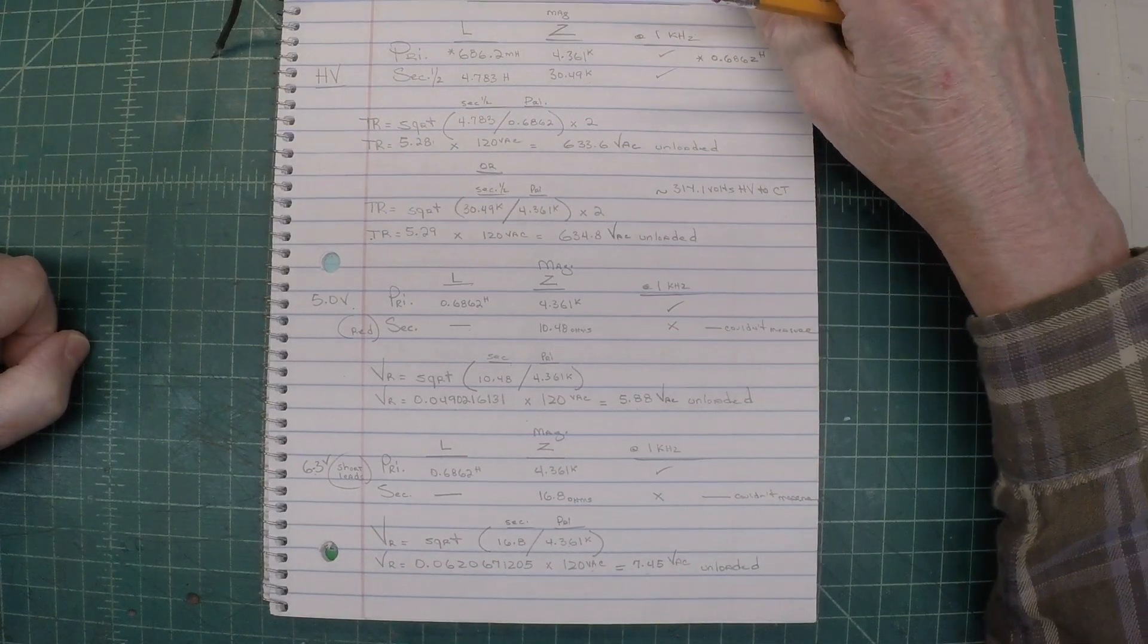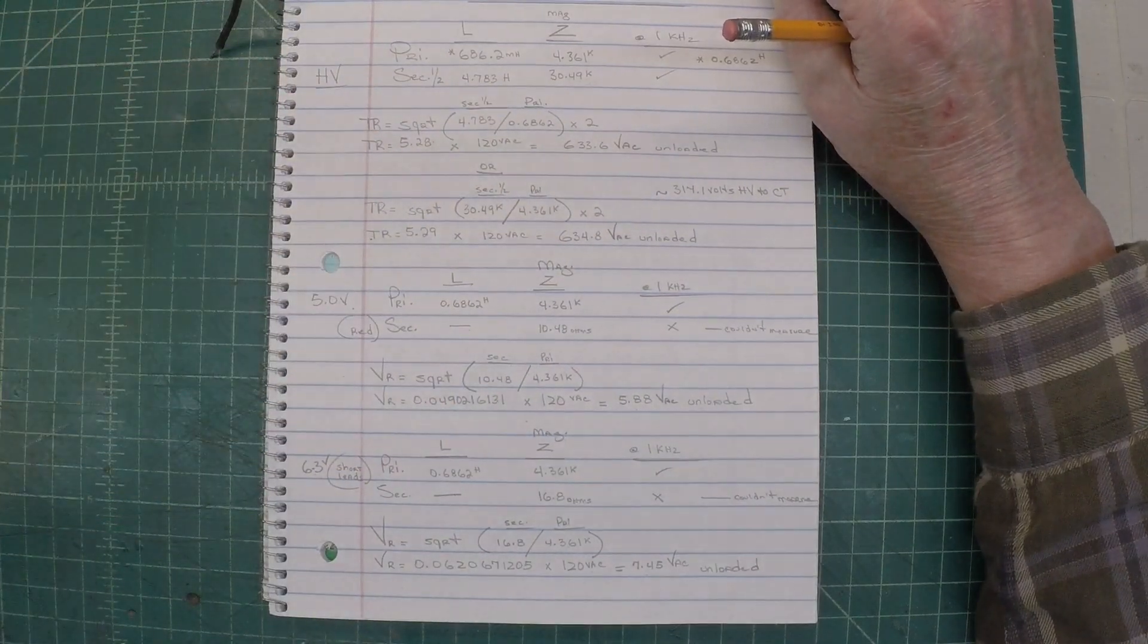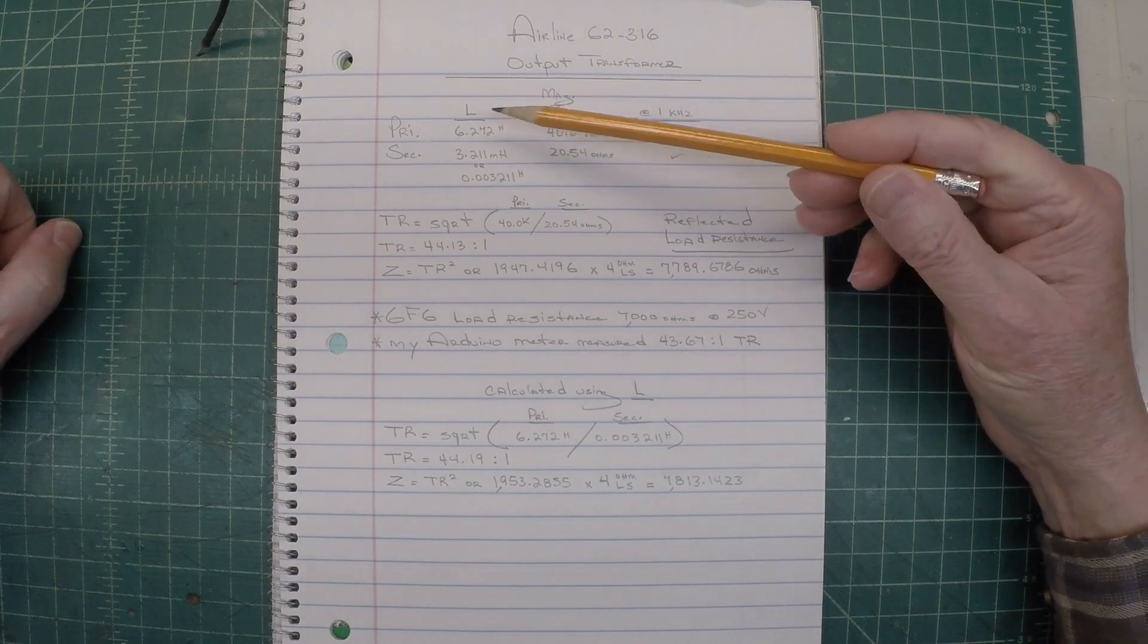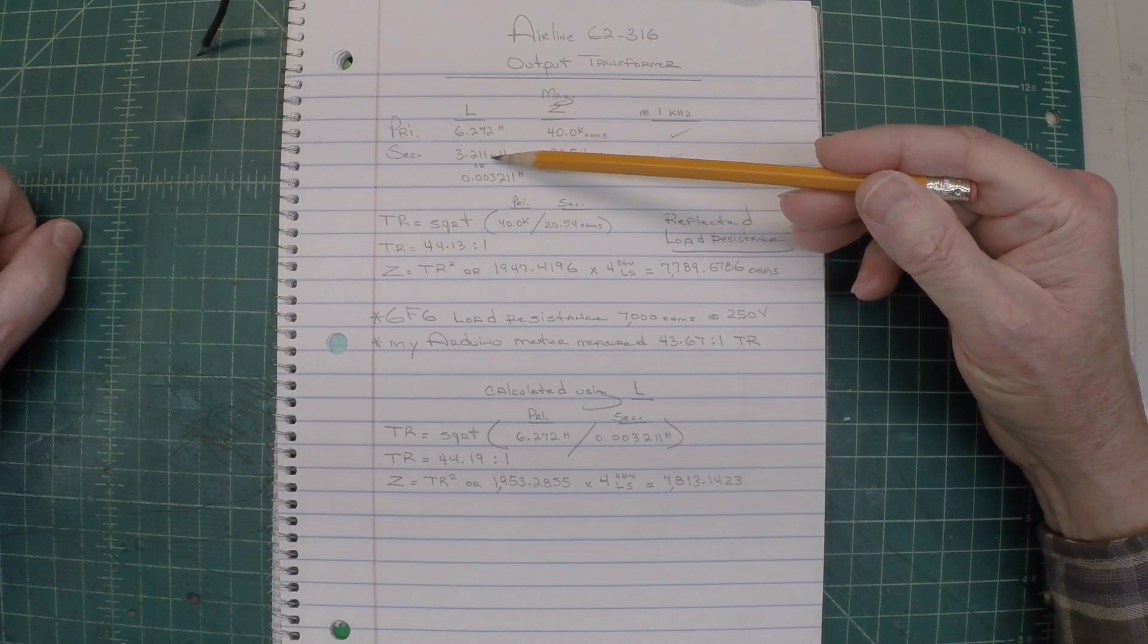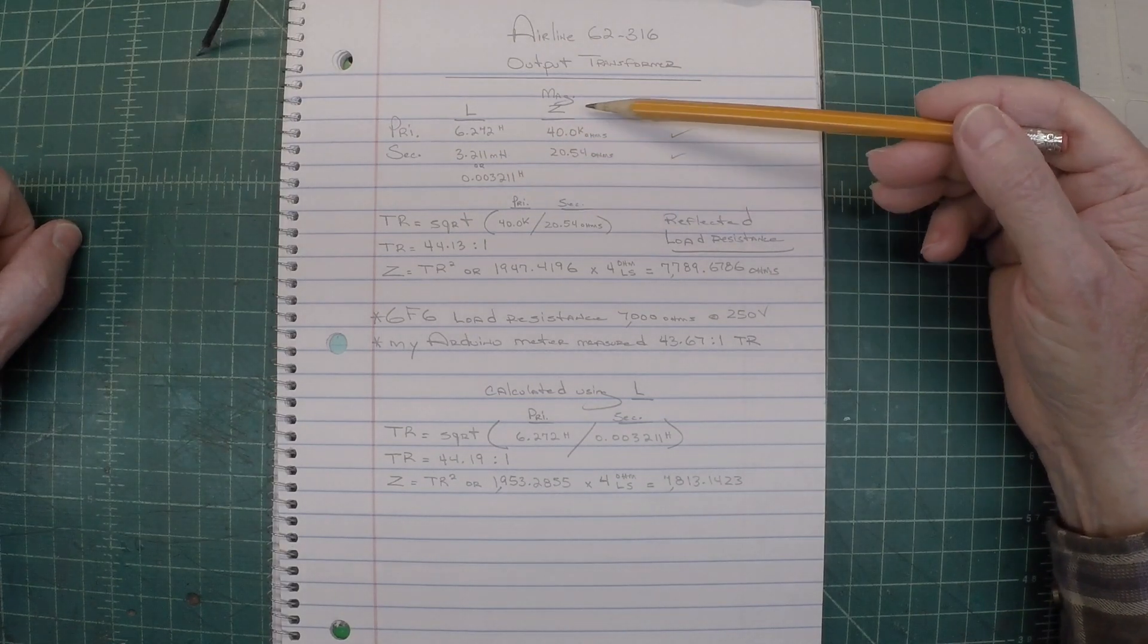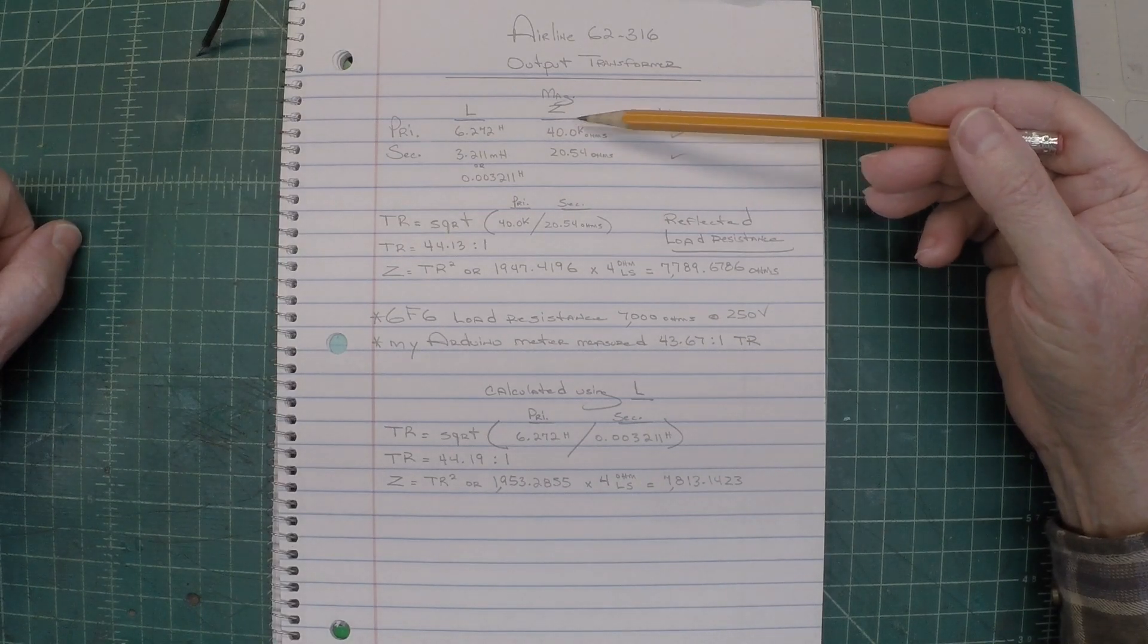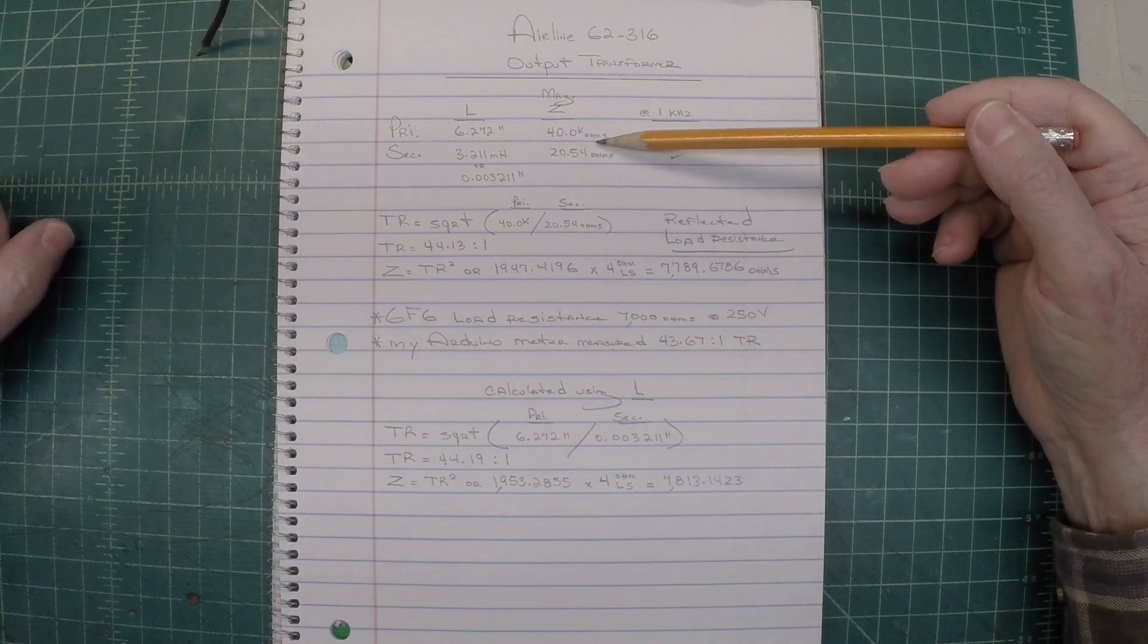Let's look over at the output transformer now. Let me show you the measurements that I recorded there. I'll show both methods here. I've got the primary inductance and secondary inductance called out. Converted the millihenries into henries. And then the magnitude, that being the total impedance, is indicated or measured from the LCR 45 meter.